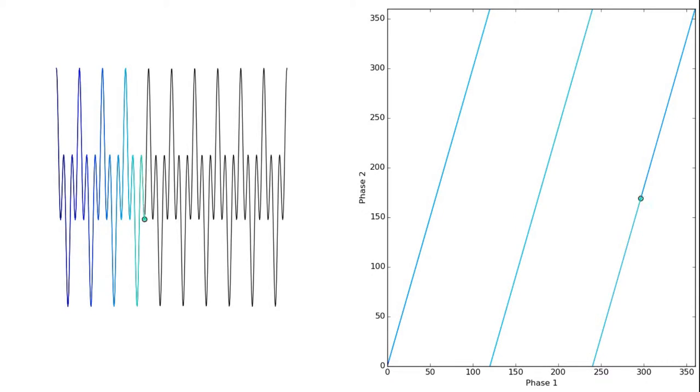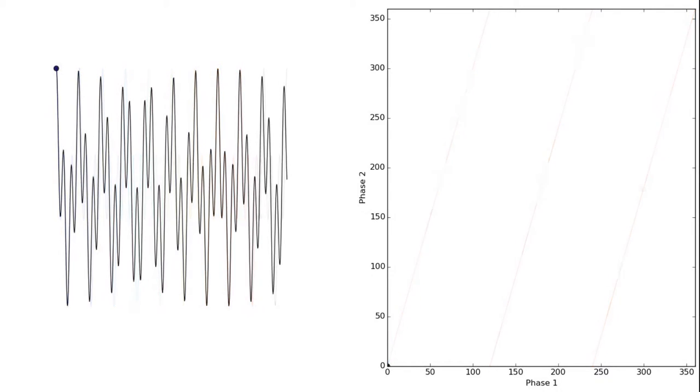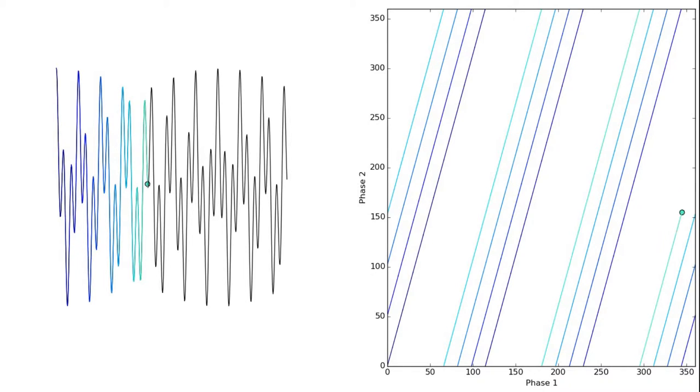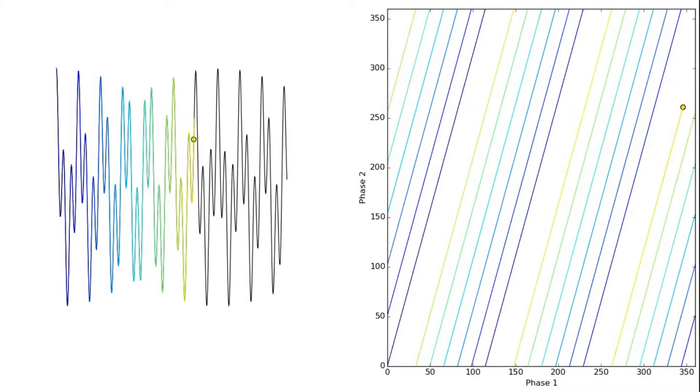As you can see, after the longer period completes, the curve retraces the same exact path along the torus. For the non-commensurate case, on the other hand, the path never retraces itself, so eventually the curve will fill the entire surface of the torus.